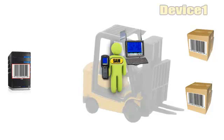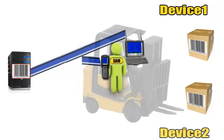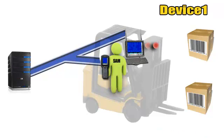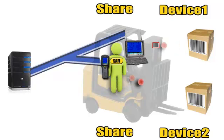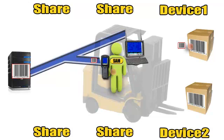Sam is on a forklift equipped with a truck mount scanner. He can reach most of the inventory, but several items cannot be reached from the forklift. To increase workflow efficiency, Sam can be issued a second mobile device or briefly borrow a device from a co-worker. He can then join the second device to his existing truck mount session for seamless and continuous data entry. Sam can continue to use both devices in the same session or close the second session and return the device back to his co-worker.